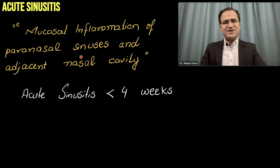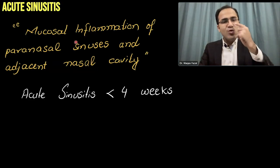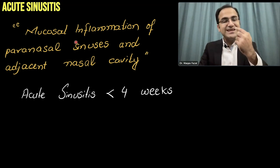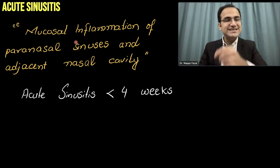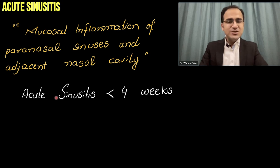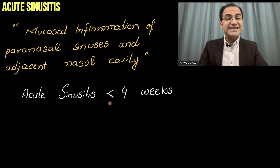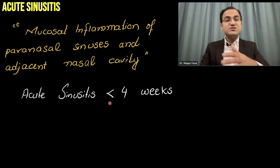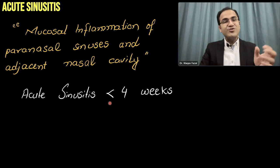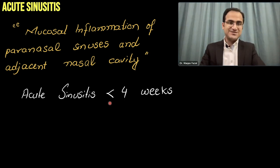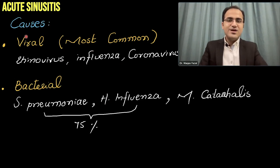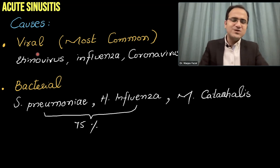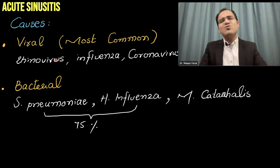Acute sinusitis is basically mucosal inflammation of the paranasal sinuses and the adjacent nasal cavity. Acute sinusitis is defined as lasting less than four weeks. If it lasts more than four weeks, it is called chronic sinusitis.